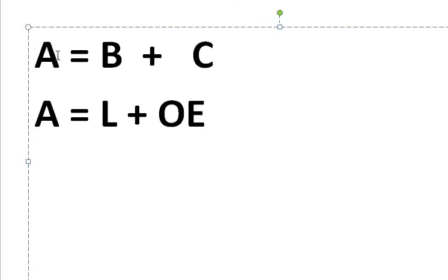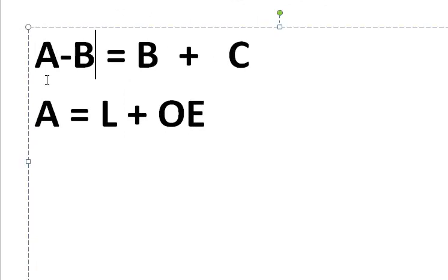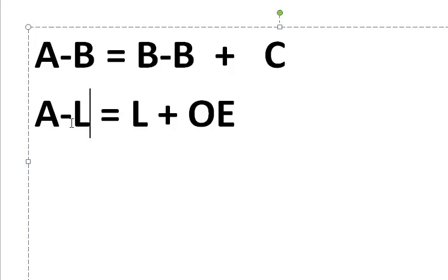Now, just like we can deduct B from both sides, minus B, minus B, we can deduct liabilities from both sides. Minus L, minus L,